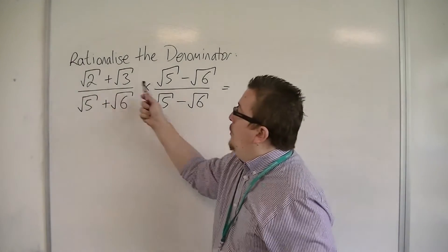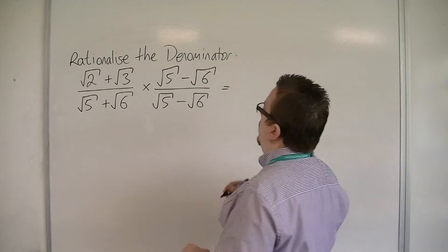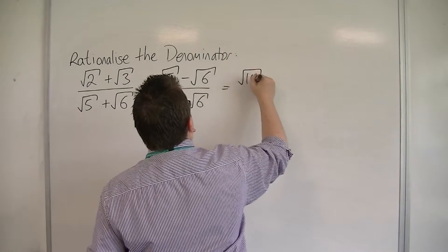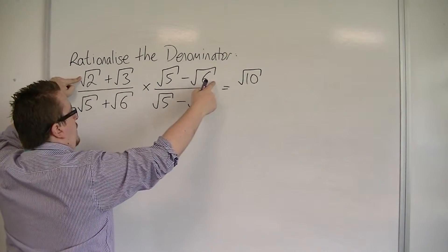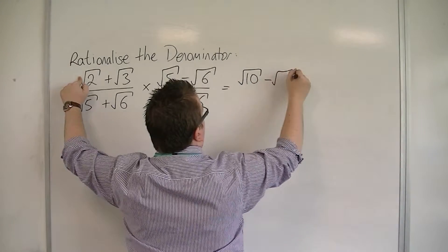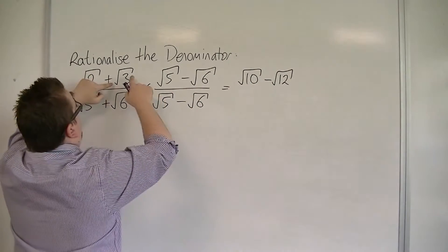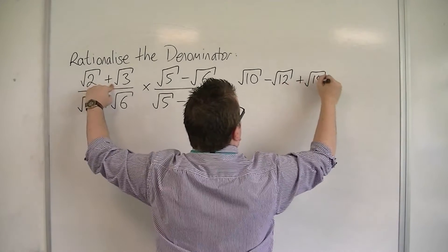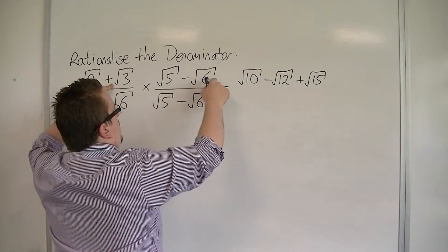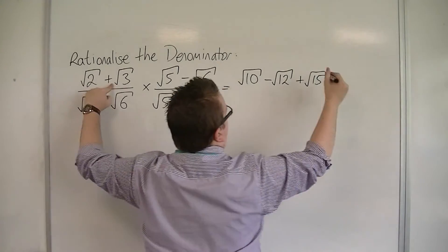So we've got root 2 times root 5, which is root 10. I've got root 2 times minus root 6, so that's minus root 12. I've got root 3 times root 5, which is root 15. And then I've got root 3 times minus root 6, which is minus root 18.